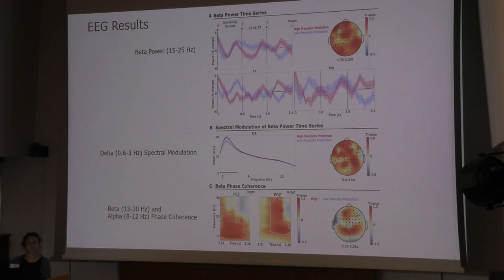Here you see beta power activity between 15 and 25 hertz during the entrainment period, starting with the first entraining sound until target presentation. For some electrodes, this beta activity seems to align with the entraining sounds, at least for the high precision prediction.